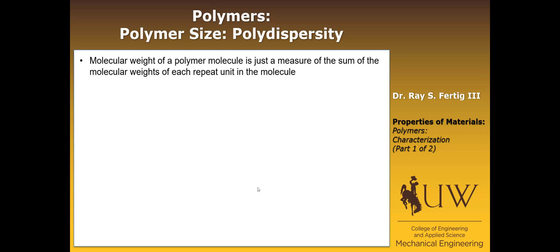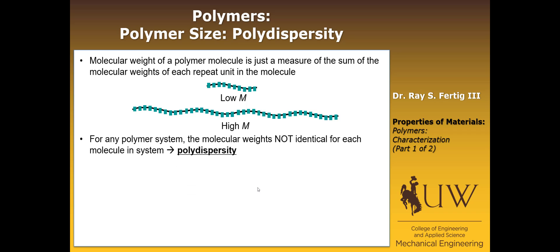Now let's talk about polymer size. Polymer size is measured by the molecular weight of a molecule - basically the sum of the molecular weights of each repeat unit in the molecule. If I have a very short molecule, I don't have many repeat units, so I'll have a low molecular weight. If I have a very long polymer chain, I'll have a lot of repeat units that sum up to give a high molecular weight. The important thing to remember is that for any polymer system, the molecular weights are not identical for each molecule in the system. You can't say there's 50 repeat units and every molecule has that. That's not how it works. It's actually represented by a distribution.